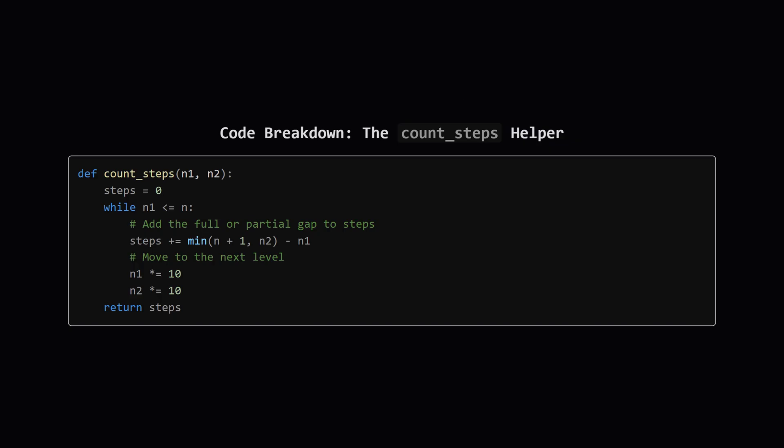This is our helper function for counting the gap. It takes two numbers, which represent the start of the current prefix group, and the start of the next one. It loops as long as the start of the group is within our limit, n.